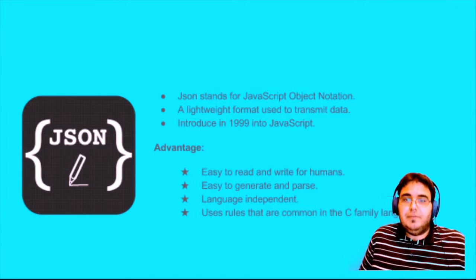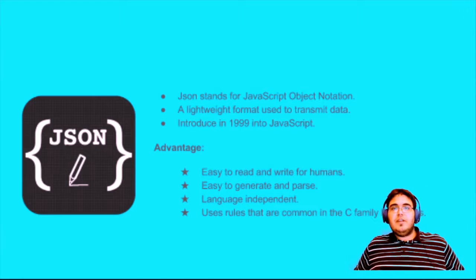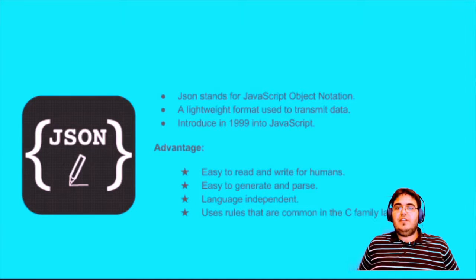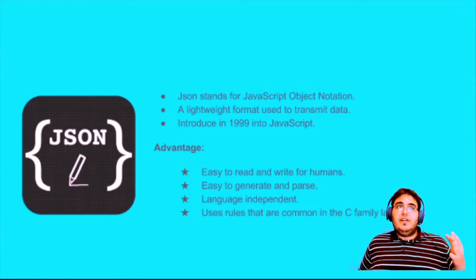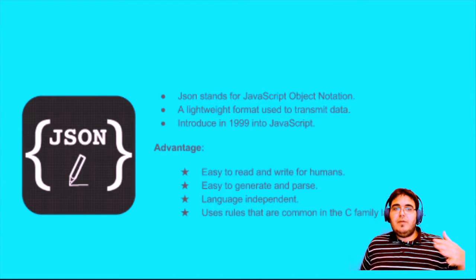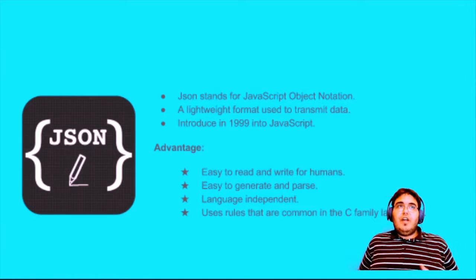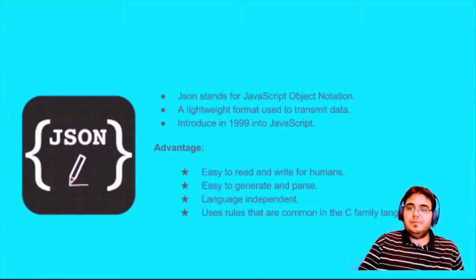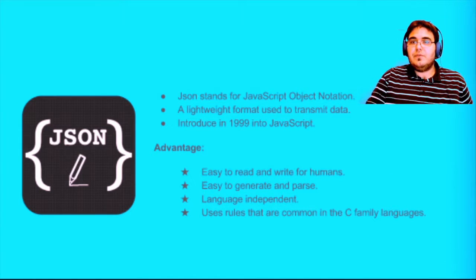Also, the structure of JSON is easier to navigate than XML. JSON stands for JavaScript Object Notation. Like I said, it's a lightweight format used for transmitting and sending data. It was introduced in 1999 as one of the revisions for JavaScript. JSON is easy to read and write for humans, easy to generate and parse. It's language independent, meaning it doesn't matter which language you're working on — Java, Swift, C#, C++ — it does not depend on the language. However, the creators decided to use some of the common rules from the C language family.